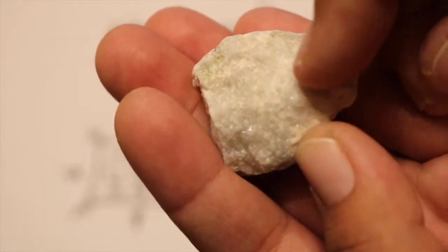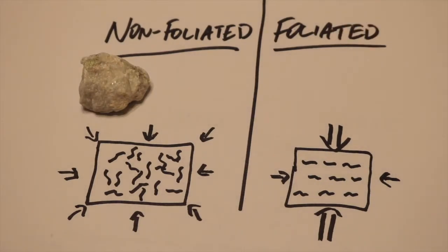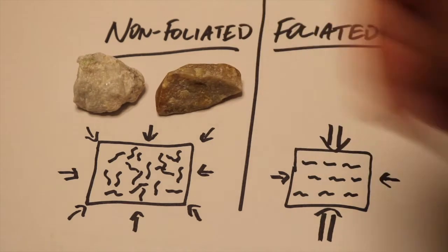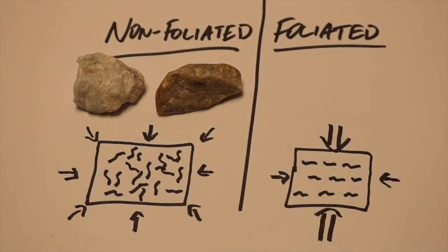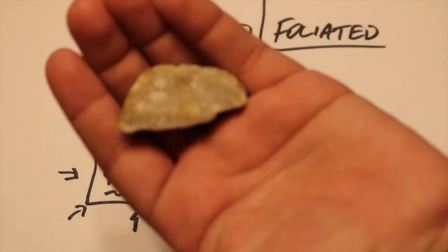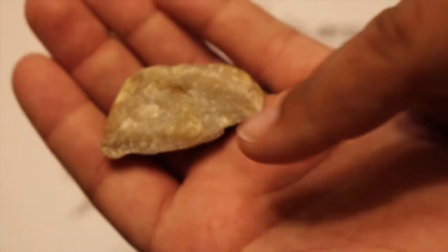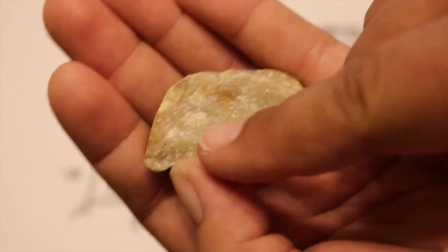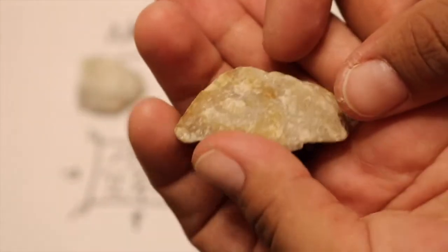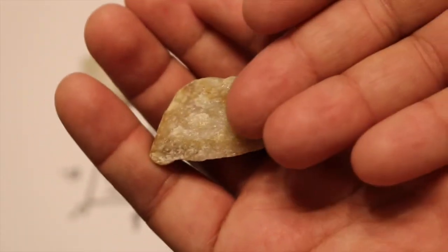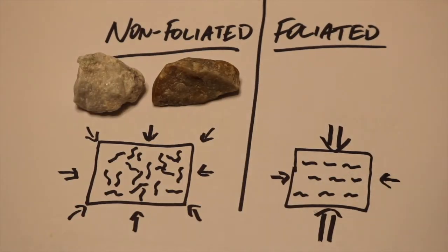Another example of a non-foliated metamorphic rock in your box is a quartzite. Now, a quartzite is considered a high-grade metamorphic rock, and it is formed from a sedimentary rock called quartz sandstone. So, just like marble, here you don't see any kind of distinct patterning or layering or any kind of preferential alignment of minerals. It just looks massive and slightly granular. Some other types of non-foliated rocks are ones you have in your box, like hornfels, and you also have a slate. Now, a slate is an interesting metamorphic rock because slate can form in both non-foliated and foliated environments.